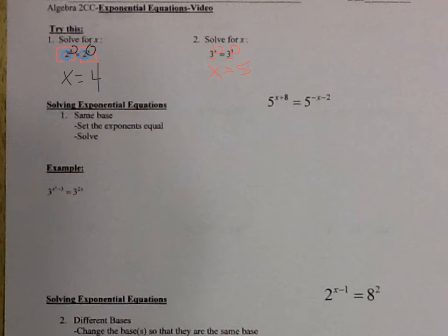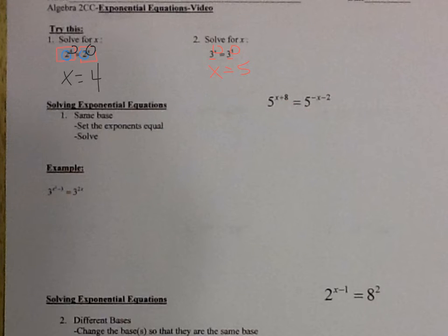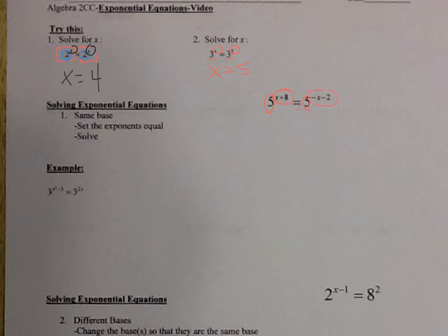So now let's talk about different types of exponents — solving exponential equations. If you have the same base, it's pretty basic, exactly what we did in the try this. Look at this over here on the right: I have 5 to the x plus 8 equals 5 to the negative x minus 2. They both have a base of 5, so if they have to be equal to each other and both have a base of 5, then the exponents have to be equal. So x plus 8 has to be equal to negative x minus 2.